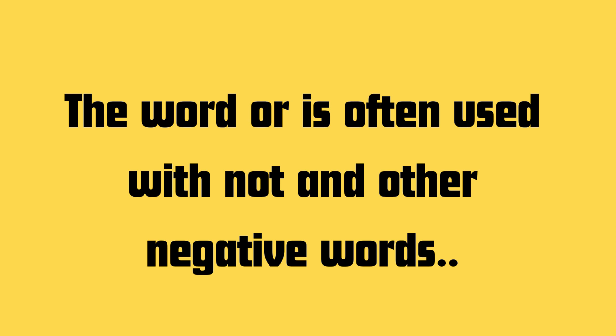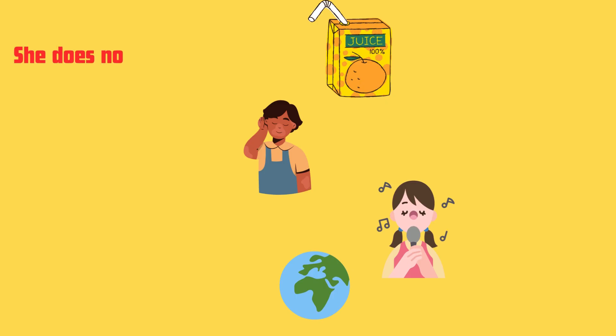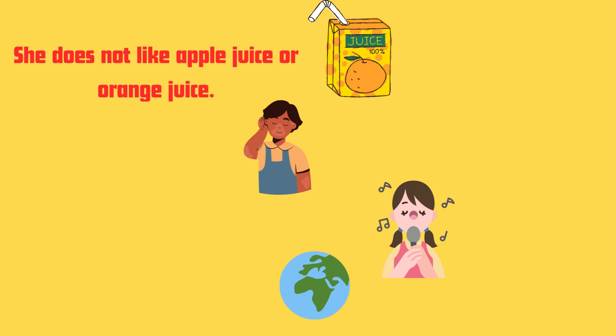You have to know that the word 'or' is often used with 'not' and other negative words. For example: she does not like apple juice or orange juice.